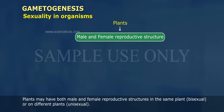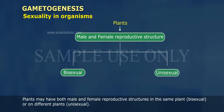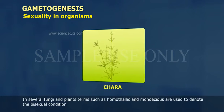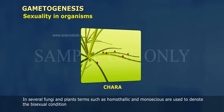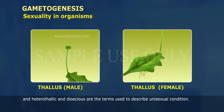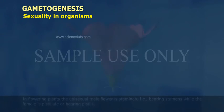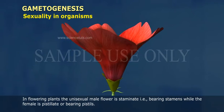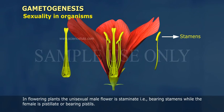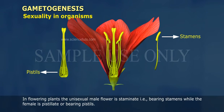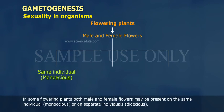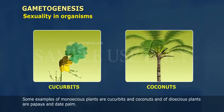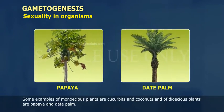Plants may have both male and female reproductive structures in the same plant, bisexual, or on different plants, unisexual. In several fungi and plants, terms such as homothalic and monoecious are used to denote the bisexual condition, and heterothalic and dioecious are terms used to describe the unisexual condition. In flowering plants, the unisexual male flower is staminate, that is, bearing stamens, while the female is pistillate, or bearing pistils. In some flowering plants, both male and female flowers may be present on the same individual, monoecious, or on separate individuals, dioecious. Some examples of monoecious plants are cucurbits and coconuts, and of dioecious plants are papaya and date palm.